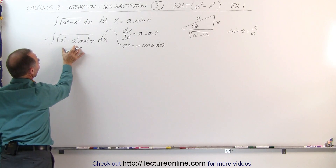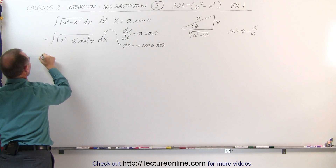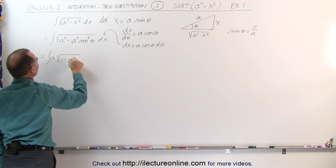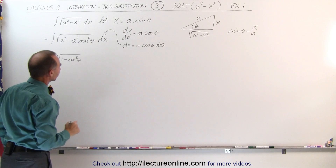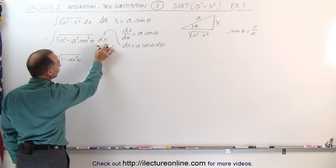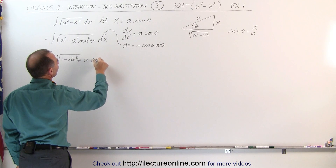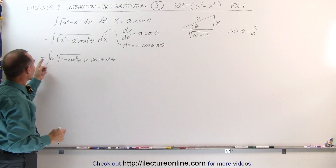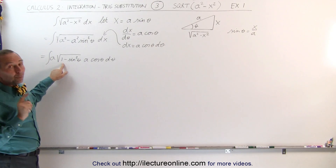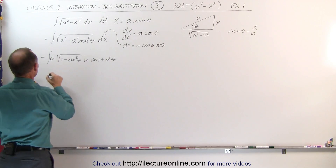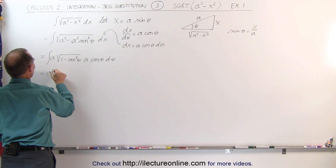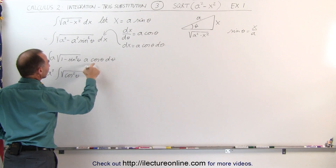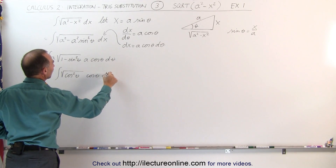Next, we factor out an a squared from inside the square root, so this becomes the integral of a times the square root of 1 minus sine squared theta, times a times the cosine of theta dθ. Notice we have an a times a that comes outside the integral, and 1 minus sine squared theta becomes cosine squared theta. So this becomes a squared times the integral of the square root of cosine squared theta times cosine of theta times dθ.